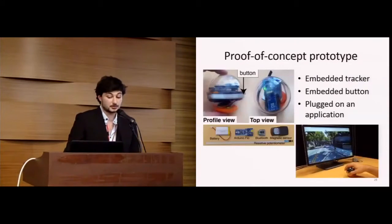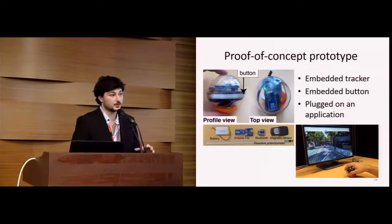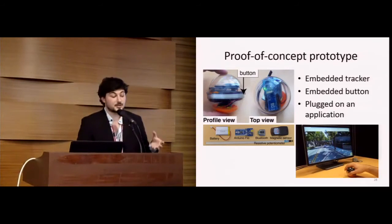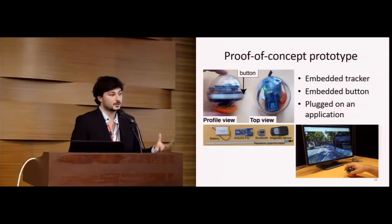To go a little further, we also developed a proof-of-concept prototype which is totally embedded. It is based on a six degrees of freedom magnetic sensor which tracks the position and orientation of the device in real time. We also added an embedded button on this device using a resistive potentiometer and a large enough IO. Using this prototype, we plugged it into a real application, which is Google Street View.